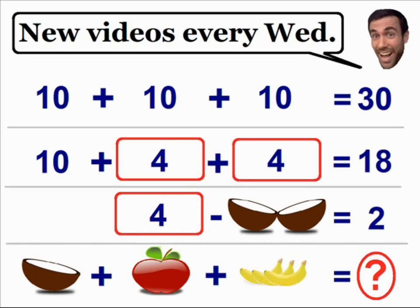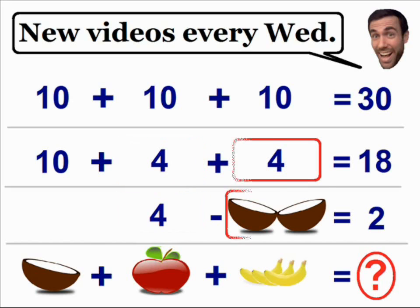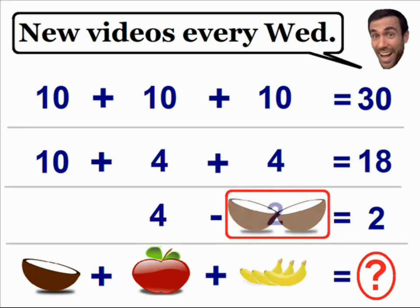Now we can find the value of the coconuts in the third equation. In order to make this equation true, we know the coconuts must have a value of 2 — 4 minus 2 is equal to 2.